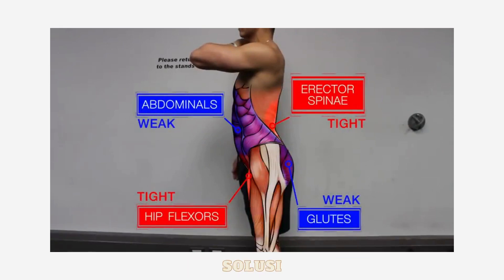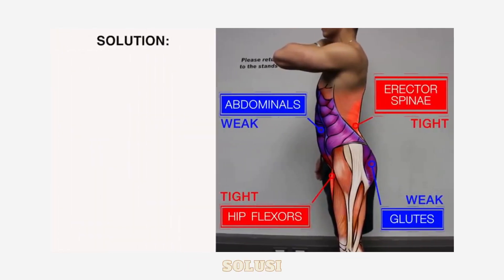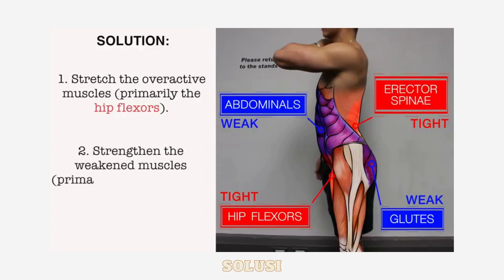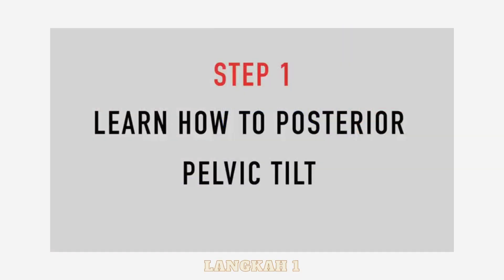So to solve this, you want to focus on stretching the overactive muscles, primarily the hip flexors, while strengthening the weakened muscles between the abdominals and the hip flexors.